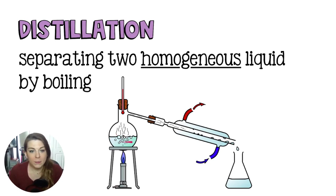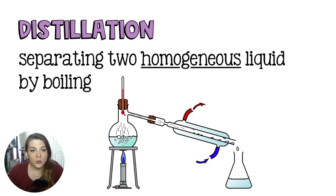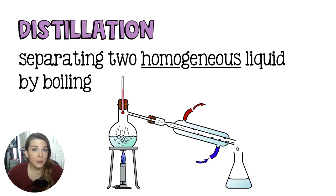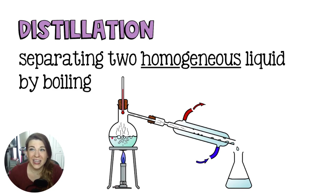Our mixture goes into this boiling flask and is heated, usually by a Bunsen burner, but you could also use a hot plate. Whichever of the two liquids boils first is going to begin to evaporate. You'll be able to tell which is evaporating based on the temperature, because temperature doesn't change during a phase change. Rubbing alcohol evaporates at around 78°C and water at 100°C.